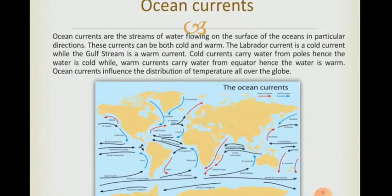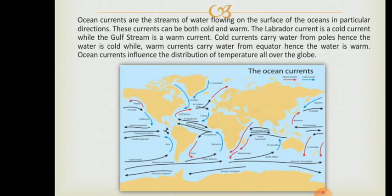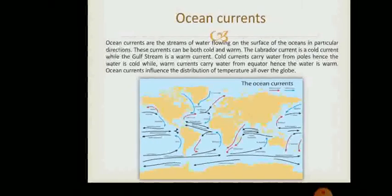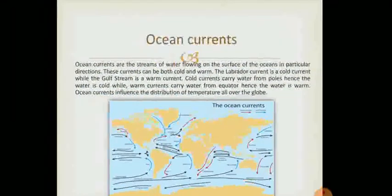Hence ocean currents influence the distribution of temperature all over the globe. In this picture you can see the movements of oceans, the ocean currents. The red arrows show the warm current and the cold arrows show the cold current. I hope you understood this chapter children. Thank you and have a good day.